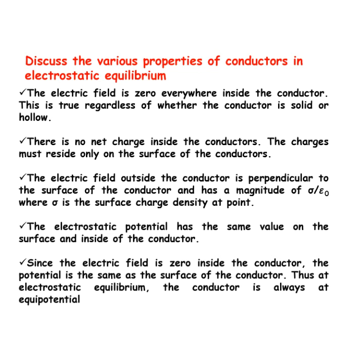How can a very uniform electric field be created? Consider a system of two metal plates with opposite charges on them. The properties of conductors in electrostatic equilibrium indicate that the electric field between the plates will be uniform in strength and direction — except near the edges. The excess charges distribute themselves uniformly, producing field lines that are uniformly spaced and perpendicular to the surface. The edge effects are less important when the plates are close together.